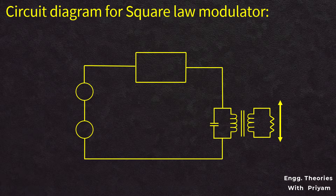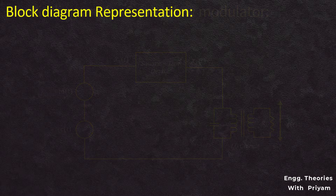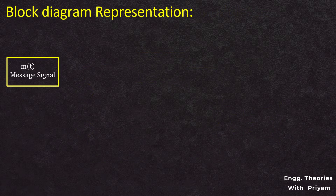A square law modulator circuit consists of a modulating or message signal source m(t), a carrier signal source c(t), a nonlinear or square law device, and a bandpass filter constructed using an LC tuned circuit. Let us understand the block diagram for a square law modulator.